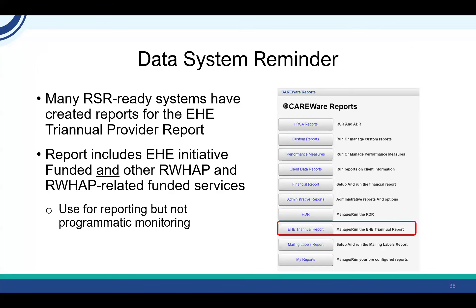If you have all of your data in one system that isn't RSR ready, you can run the data from that system and enter the combined aggregate numbers in the report. You can also contact us at the DISC team — we can talk through your processes and come up with a submission game plan that works for you. Many RSR ready systems have created reports for the EHE triannual provider report. For careware users, there's a report in careware that will create the data needed. It's important to remember that the report includes eligible clients who received EHE initiative, Ryan White or Ryan White related funded services — but this careware report is not great for recipients to use for monitoring only EHE initiative funded activities when providers are receiving other funding.